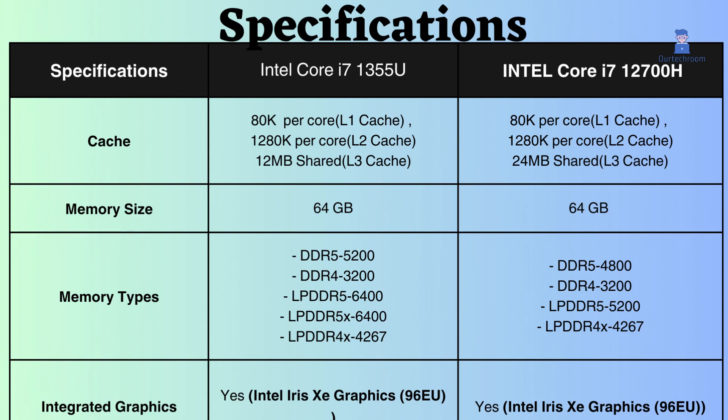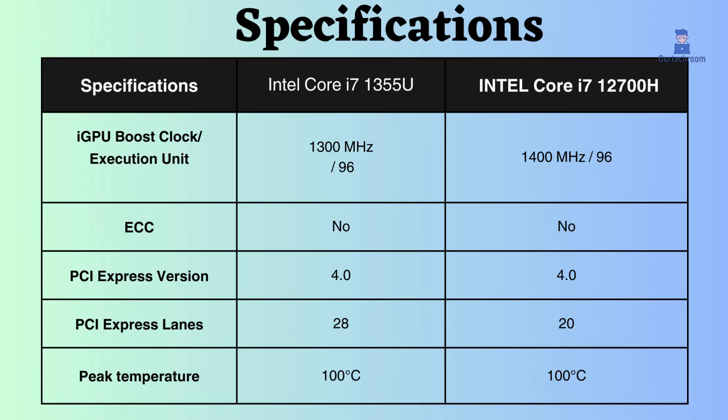Both processors support an integrated GPU, but the boost frequency of the i7-12700H is higher than the Core i7-1355U. Neither Intel processor supports ECC. Both support PCI version 4 and have the same 28 lanes — the more lanes you have, the more PCI devices you can connect.